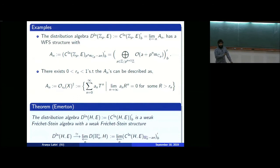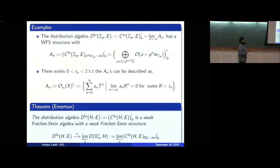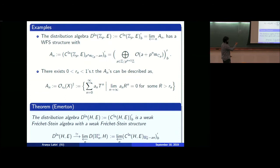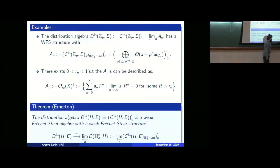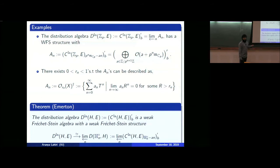The main reason we are interested in weak Fréchet-Stein algebras is the following theorem of Emerton: if we start with a uniform pro-p group H — in fact this works for compact groups more generally — the distribution algebra, which is the strong dual of the locally analytic functions on H, has a weak Fréchet-Stein structure. In particular, the weak Fréchet-Stein structure is again given by the dual of the H_{n,0} rigid analytic vectors.